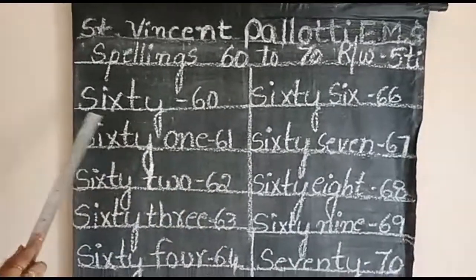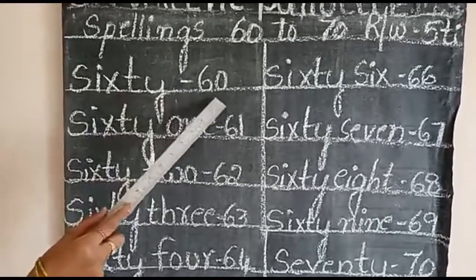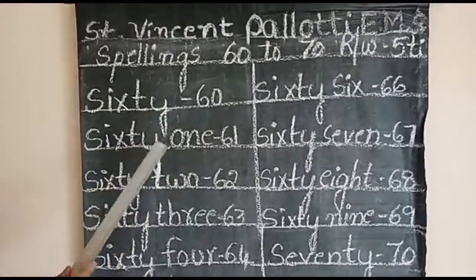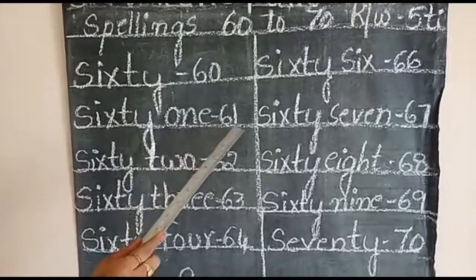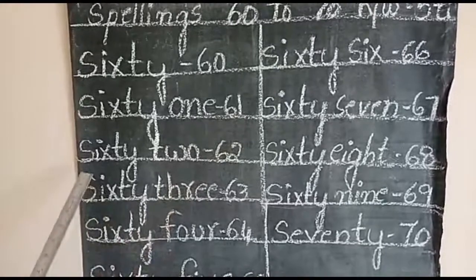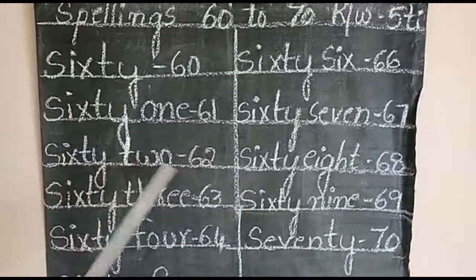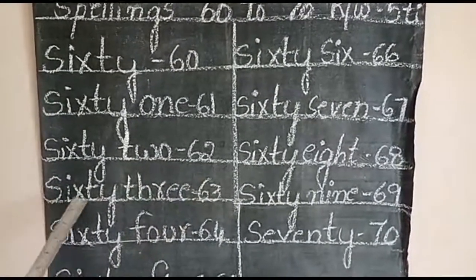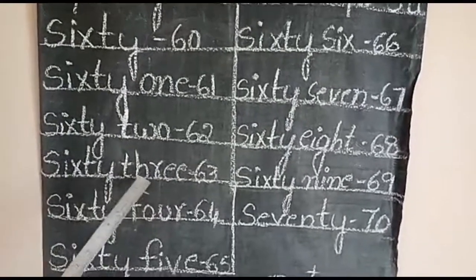Okay children, look at here. S-I-X-T-Y 60. 6-0, 60. S-I-X-T-Y O-N-E 61. 6-1, 61. S-I-X-T-Y T-W-O 62. 6-2, 62.